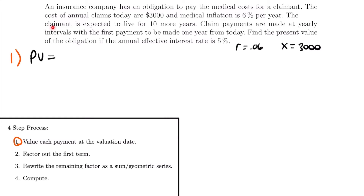We're told the claimant is expected to live for 10 more years. That tells us the insurance company is only obligated to make these payments while the claimant is still alive — they won't continue paying medical costs after that person has passed away. So there are only 10 more years worth of payments, meaning N, the number of payments, is equal to 10. The payments are made at yearly intervals, and the first payment is to be made one year from today.